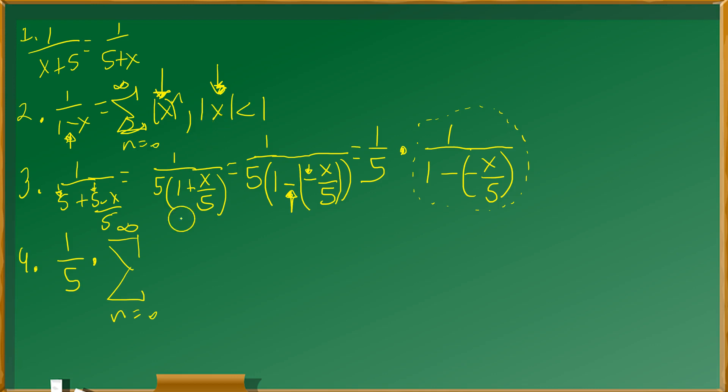You replace all of the x's. So that's going to give you now negative x over 5 to the n. And then you put here negative x over 5 less than 1 also, like that for the interval. Then you proceed to work on this.